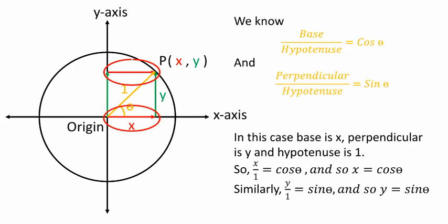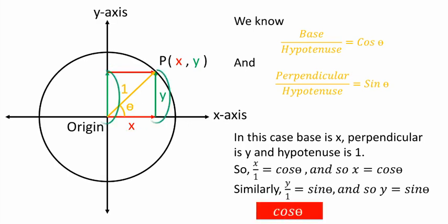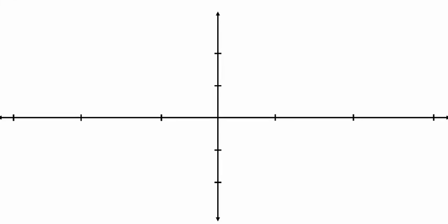These two horizontal lines, which are the x-coordinate of point P, represent the cosine function. And these two vertical lines, which are the y-coordinate of point P, represent the sine function. Here comes the graph of the sine function. It uses a set of rectangular axes with points on the positive x-axis at 0°, 90°, 180°, 270°, and on the negative x-axis at −90°, −180°, −270°. The y-axis is marked at 0.5, 1, −0.5, and −1. This is how the graph of the sine function looks.